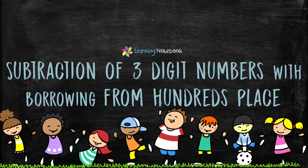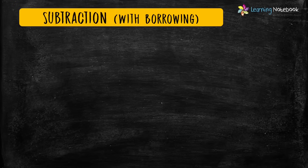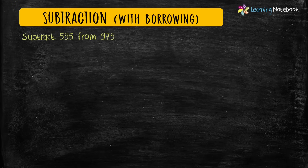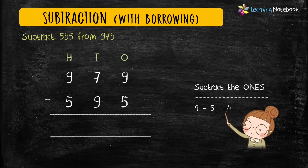Now let's learn subtraction of three-digit numbers with borrowing from hundreds place. Question: subtract 595 from 979. Write the numbers in column form. Subtract the digits at ones place: 9 minus 5 equals 4. Now move to subtract the digits at tens place.